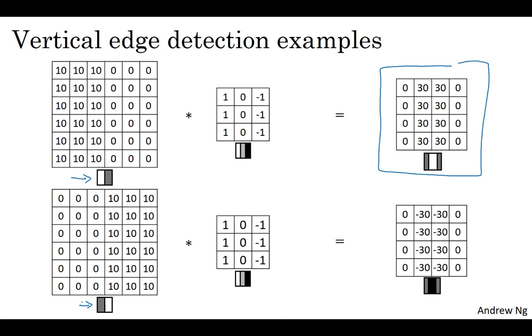Because the shade of the transitions is reversed, the 30s now get reversed as well. The negative 30s show that this is a dark to light rather than a light to dark transition. If you don't care which of these two cases it is, you could take absolute values of this output matrix. But this particular filter does make a difference between the light to dark versus the dark to light edges.